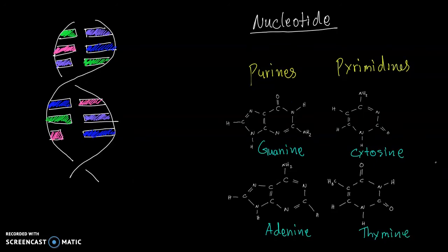As a way to remember, you can see that the purines are the two ring structure. Whereas the pyrimidines, they are one ring structure.